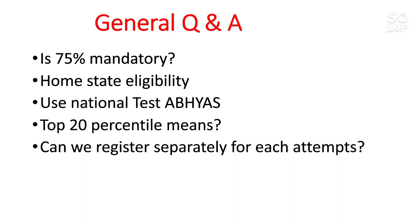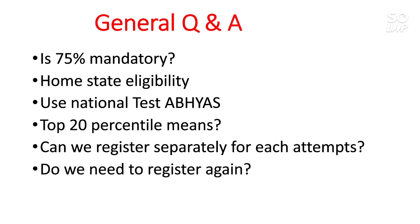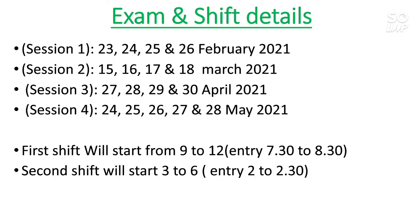Can we register separately for each attempt? No — the registration is done only once now. You just have to pay the fee again for each attempt and you will get the admit card. Registration is not done every time; you need to register only before the first attempt. If you miss the first attempt registration you cannot register later, so you must register only once before the first attempt.